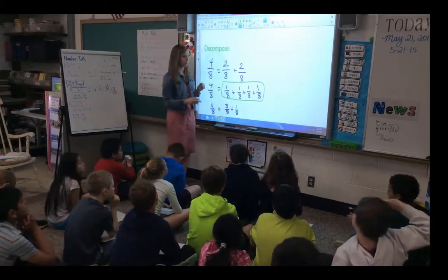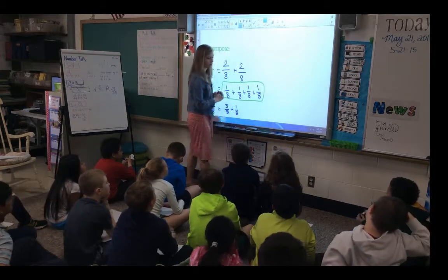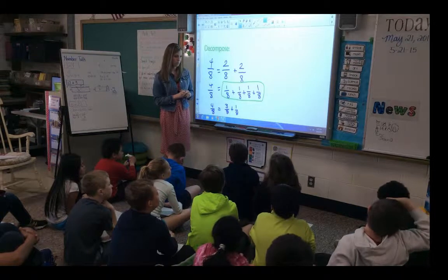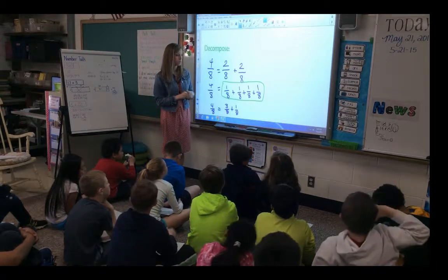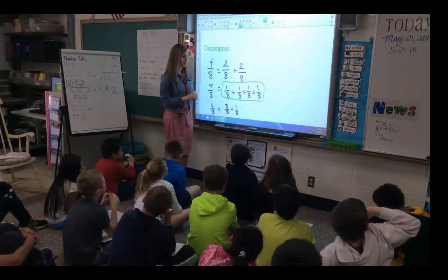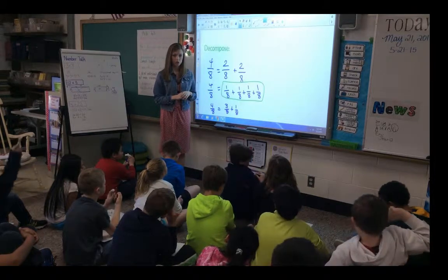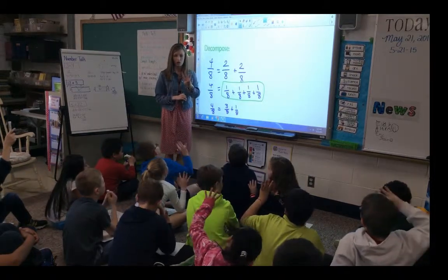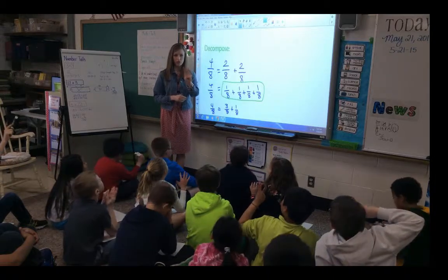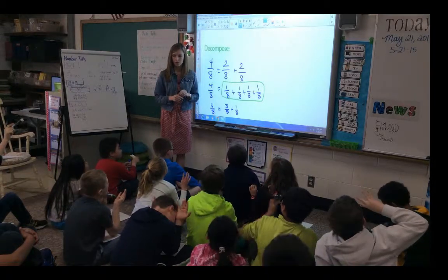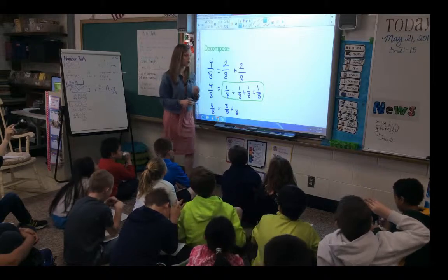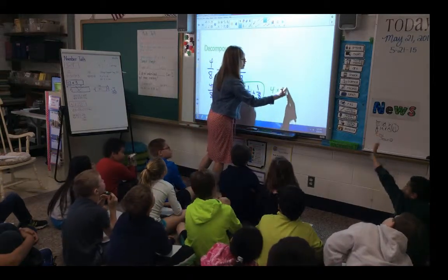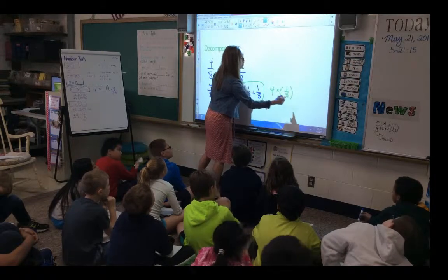Chloe? You can times the ones by — or you add all of the ones together. Show me again how many one-eighths we have. Four. And we're timesing that by what? We have four of what? We have four one-eighths. So we have four times one-eighth.